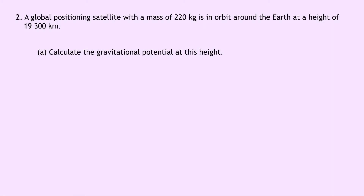Question 2 says that a global positioning satellite with a mass of 220 kilograms is in orbit around the Earth at a height of 19,300 kilometers. Part A says to calculate the gravitational potential at this height. Writing down what we know, we're trying to find gravitational potential V. We know that G is 6.67 times 10 to the minus 11 meters cubed per kilogram per second squared. The mass of the Earth, M subscript E, is 6.0 times 10 to the 24 kilograms, which you'll get on the datasheet.